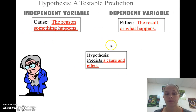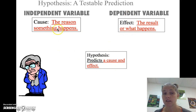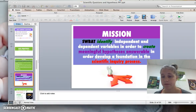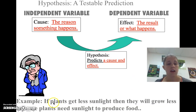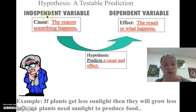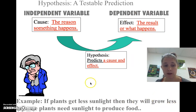Remember our independent variable is the cause, our dependent variable is the effect, and our hypothesis predicts what effect the cause will have. For example: if a plant gets less sunlight — that's what we're doing to the independent variable — then they will grow less — that's the dependent variable — because plants need sunlight to produce food, which is part of our research.